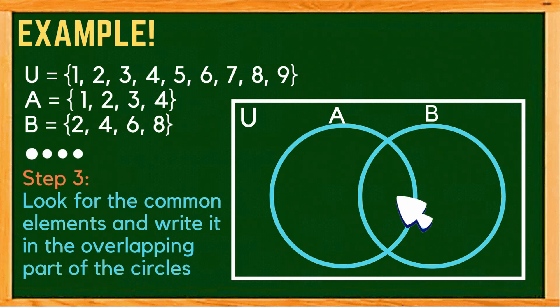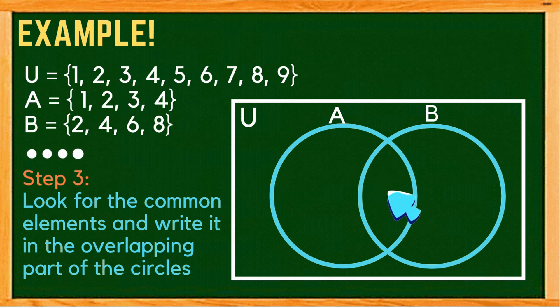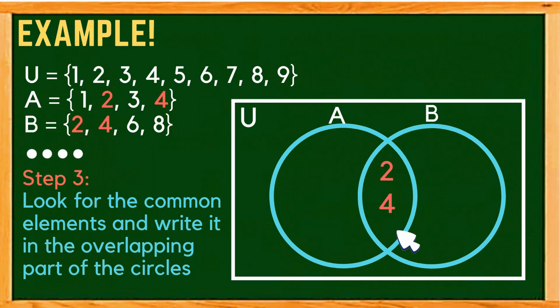Step 3: find the common elements and place them in the overlapping part of the two circles. From set A and set B, the common elements are 2 and 4.